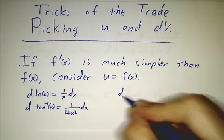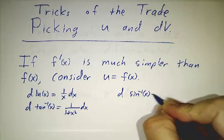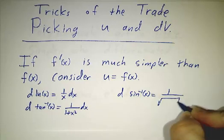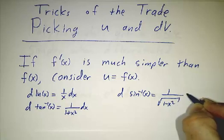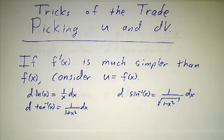If you take the derivative of the arcsine of x, you get 1 over root 1 minus x squared dx, way simpler than arcsine. So if you get one of these functions that really like to be differentiated, you should think about making those u and making the rest of the integrand dv.